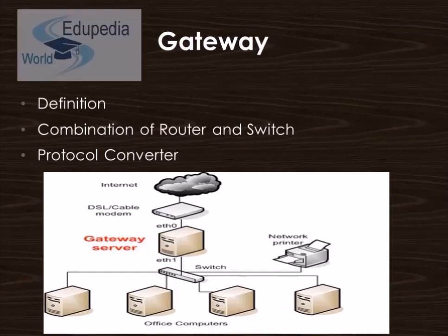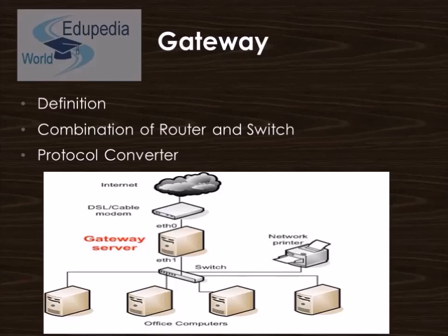Now comes the Gateway. It is a network point that acts as an entrance to another network. On the internet, a node or stopping point can be either a gateway node or a host endpoint node. The computers that control traffic within your company's network or at your local internet service provider are your gateway nodes. It is often associated with both a router, which knows where to direct a given packet of data that arrives at the gateway, as well as a switch, which furnishes the actual path in and out of the gateway for a given packet.